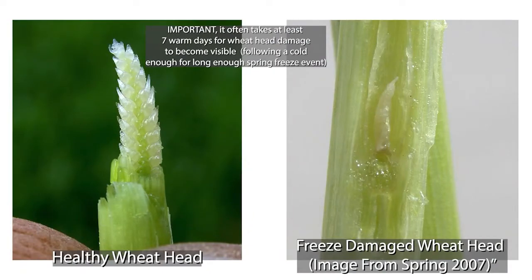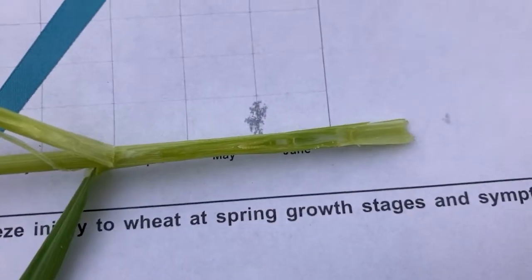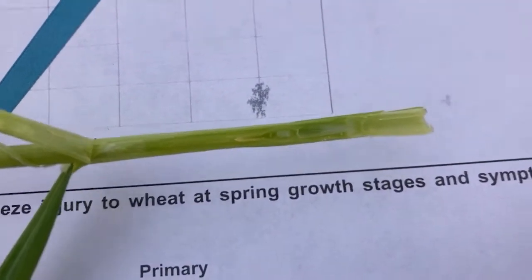The grain head is right here, and in this example it is about one and a half inches above the ground. Once that grain head appears above the soil surface, it's going to be sensitive to a spring freeze.